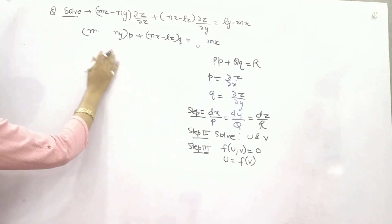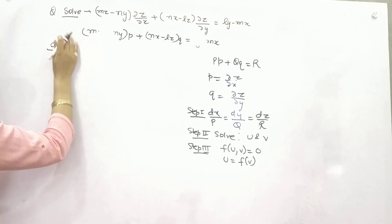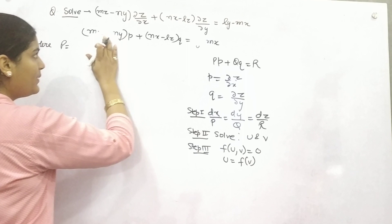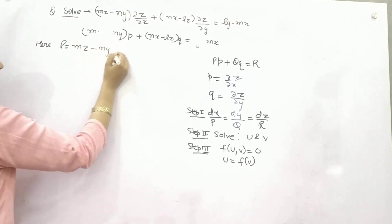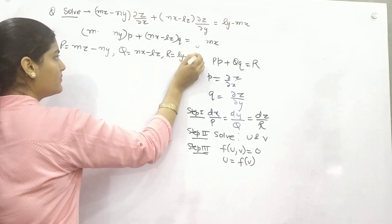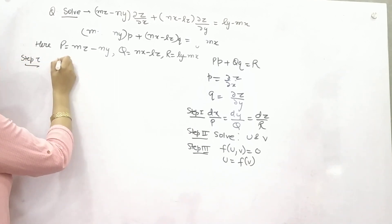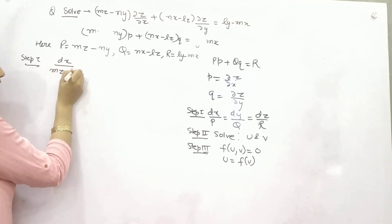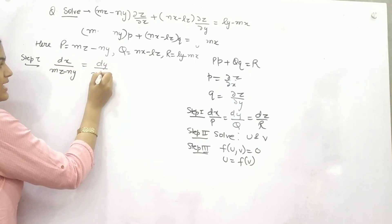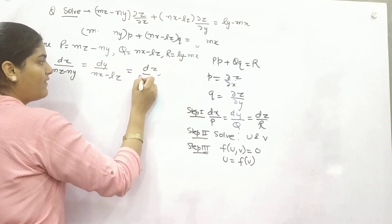Now let's begin. According to step number one, this is the form of Lagrange's linear differential equation. Your capital P is MZ - NY, Q is NX - LZ, and R is LY - MX. Now applying step 1: dx/(MZ - NY) = dy/(NX - LZ) = dz/(LY - MX).